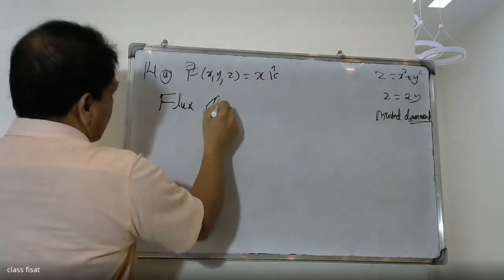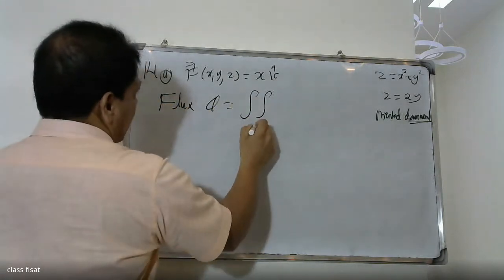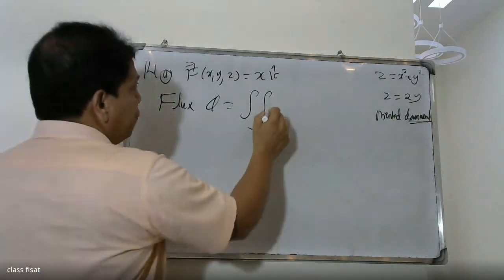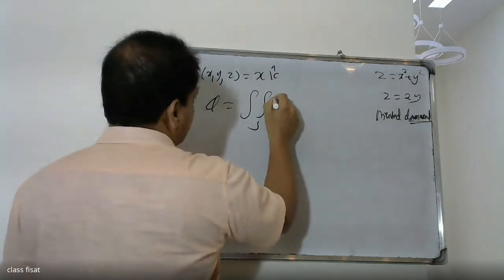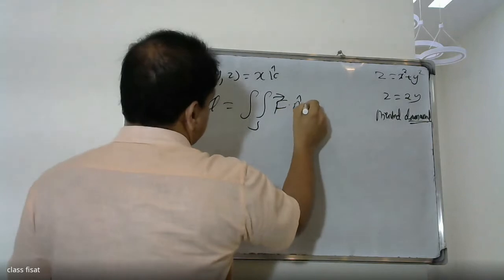The flux is equal to the double integral over S of f dot n dS.